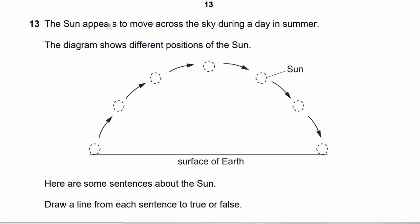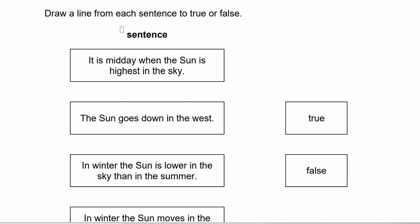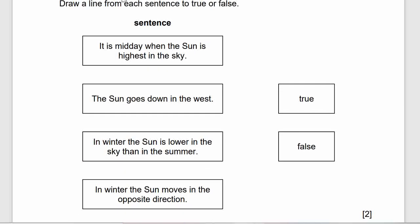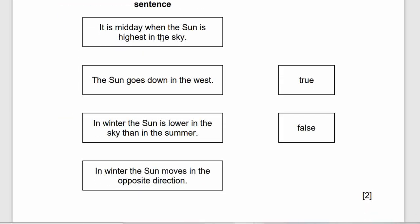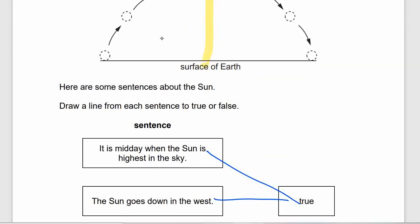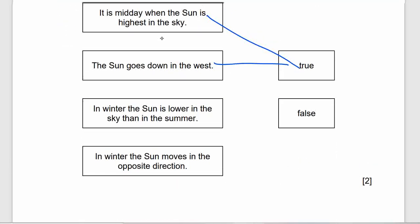We are in question 13. The sun appears to move across the sky during a day in summer. Draw a line from each sentence to true or false. It is midday when the sun is highest in the sky — true, because the diagram shows the sun at its highest at midday. The sun goes down in the west — true, the sun rises in the east and goes down in the west. In winter, the sun is lower in the sky than in summer — this is actually true.